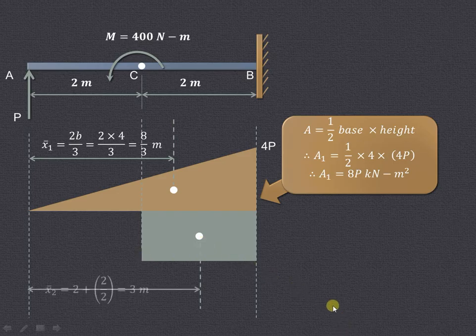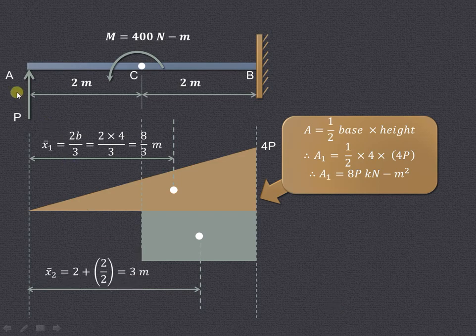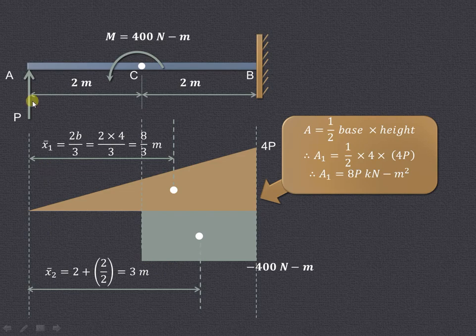So distance of this CG from point A will be equal to this 2 meter, and the centroid of this rectangle will be at the center that is 2 upon 2, so total distance will be 3 meter. As you can see over here, this X₂ bar that we have just now calculated is this 2 meter plus half of this 2 meter which is the base of this rectangle. So that is 2 by 2 that we have indicated over here.